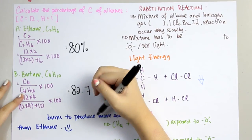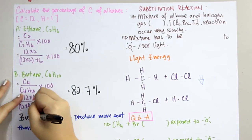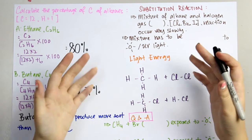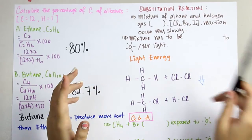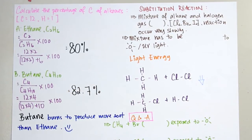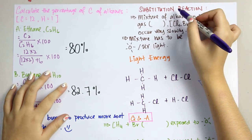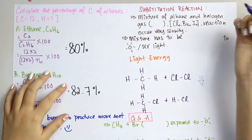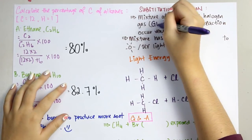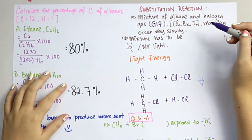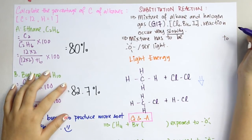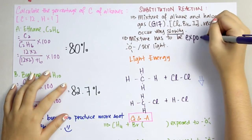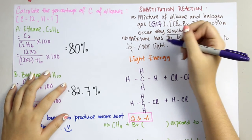As a conclusion, butane burns to produce more soot than ethane. We have done with the first chemical property, combustion. The second chemical property is substitution reaction. For substitution reaction, we first have to know what it is. A substitution reaction involves the mixture of alkane and halogen gas. Halogen gas is in group 17 of the periodic table, such as chlorine gas, bromine gas, or iodine gas. A substitution reaction occurs very slowly and the mixture has to be exposed to sunlight or UV light.